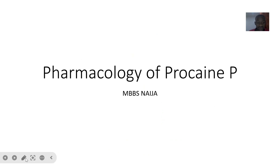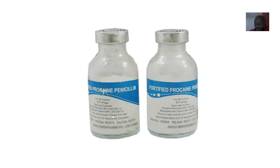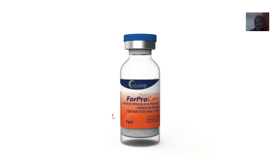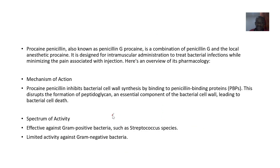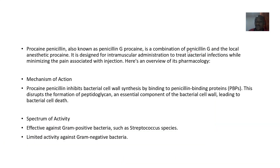We're moving to the next type of penicillin — procaine penicillin, also written as procaine P. It has a brand name and is also known as penicillin G procaine. It is essentially a combination of penicillin G with the local anesthetic procaine, which is also used in anesthesia.